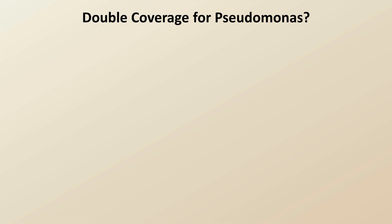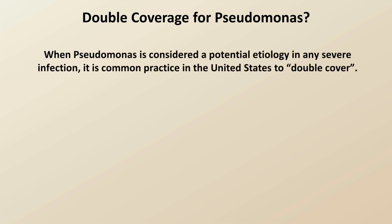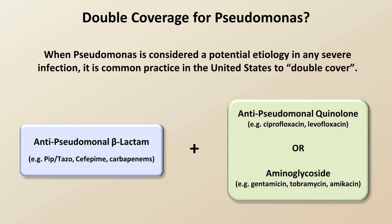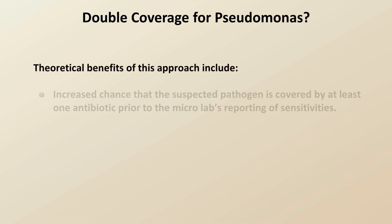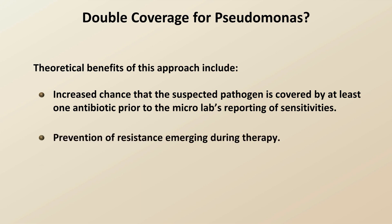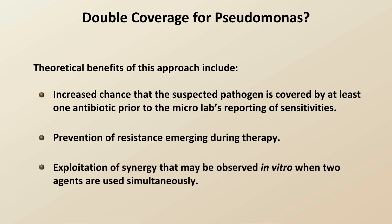I'm going to end this lecture with a discussion of a common question that arises during treatment of a possible pseudomonal infection: should an empiric antibiotic regimen chosen for possible pseudomonal infection contain not one but two antibiotics active against this bacteria? While I can't speak about the rest of the world, this is fairly common practice in the United States, most prominently when treating a suspected pseudomonal pneumonia. The exact combination used is usually an anti-pseudomonal beta-lactam plus either an anti-pseudomonal quinolone or an aminoglycoside. The theoretical benefits include an increased chance that the suspected pathogen is covered by at least one antibiotic prior to the micro lab's reporting of sensitivities, prevention of resistance emerging during therapy, and exploitation of synergy that may be observed in vitro when two agents are used simultaneously.